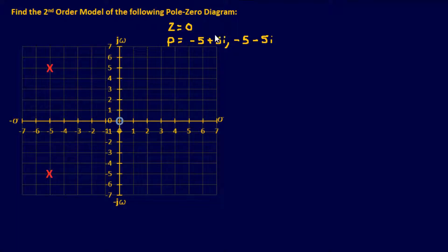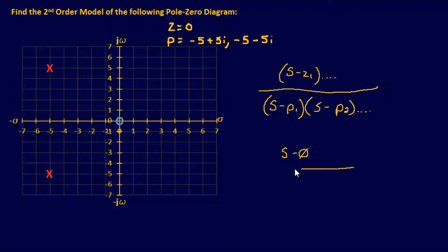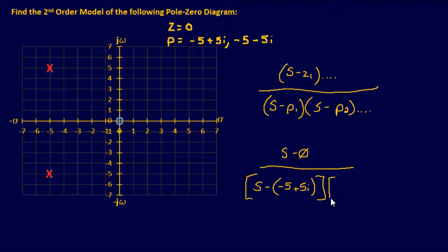Now we convert these into our standard transfer function form. The numerator is s minus zero, which is just s. The denominator is (s minus (−5 + 5j)) times (s minus (−5 − 5j)). Distributing the negative signs, the factors become (s plus 5 minus 5j) and (s plus 5 plus 5j).